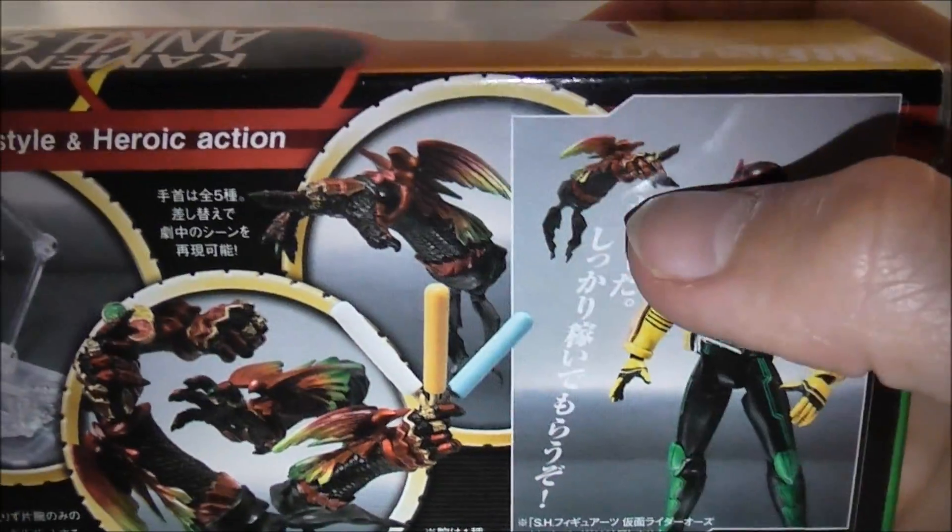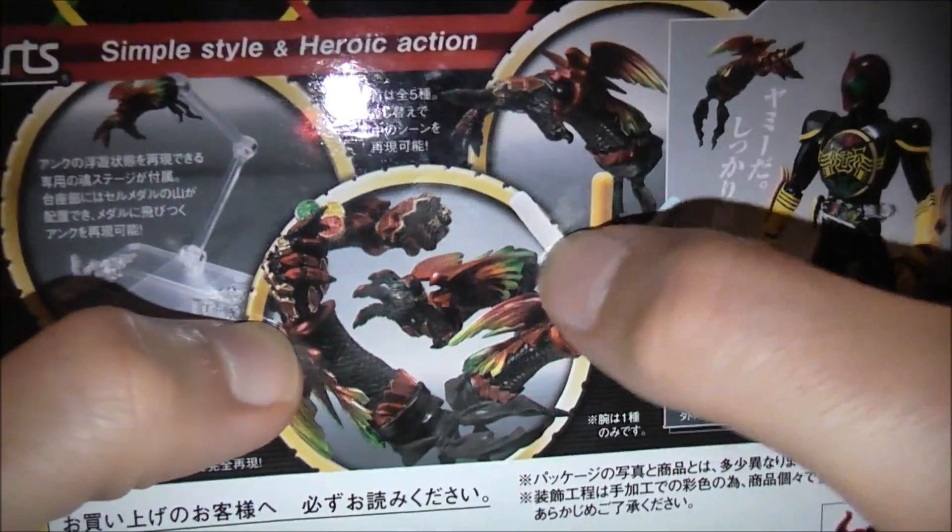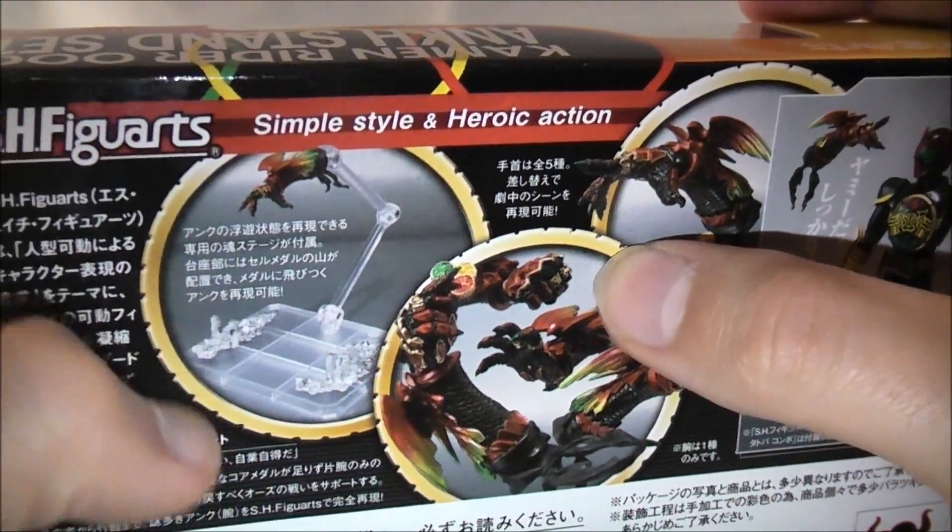Numbers. On the back it shows Ankh talking to OOO's, some of all the different hands you get. And then the stand, simple style of heroic action, yeah, with a hand.